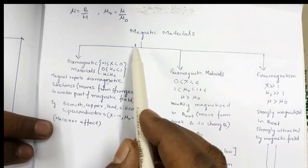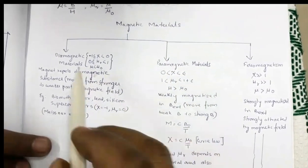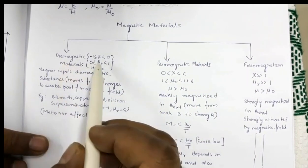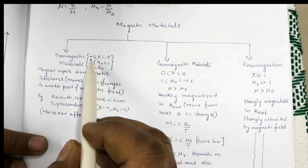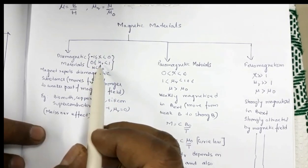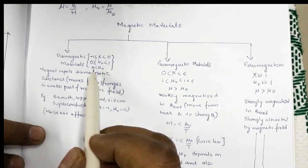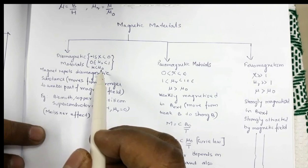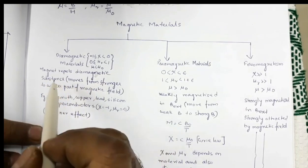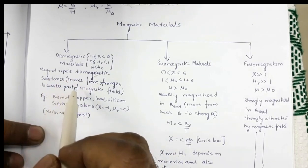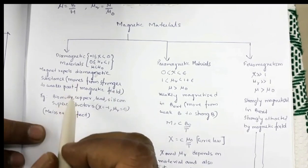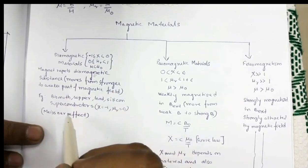The last part covers magnetic materials, which are of three types: diamagnetic, paramagnetic, and ferromagnetic. For diamagnetic materials, the magnetic susceptibility χ is between −1 and 0, relative magnetic permeability is between 0 and 1, and magnetic permeability is less than that of free space. Magnets repel diamagnetic substances — these substances move from stronger to weaker regions of the magnetic field. Examples include bismuth, copper, lead, silicon, and superconductors.